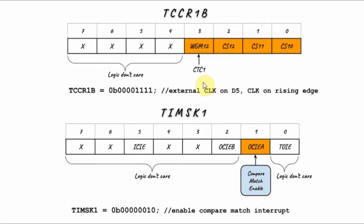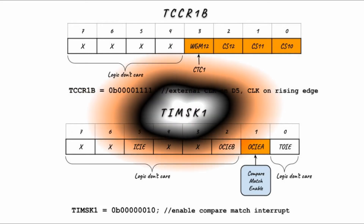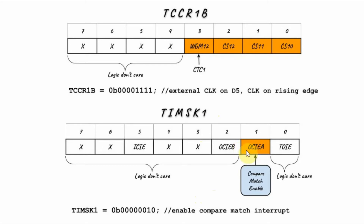We need to program two registers: the Timer 1 Control Register B and the Timer 1 Mask Register. For the control register, setting the clock select bits to 111 means we get an external clock on pin D5. Setting the WGM12 bit enables CTC (Clear Timer on Compare) for Timer 1, and the required C++ statement is shown. For the Timer 1 Mask Register, enabling the compare match interrupt bit gives us the compare match interrupt, and the required C++ statement is shown.